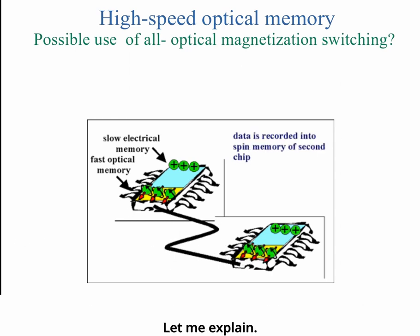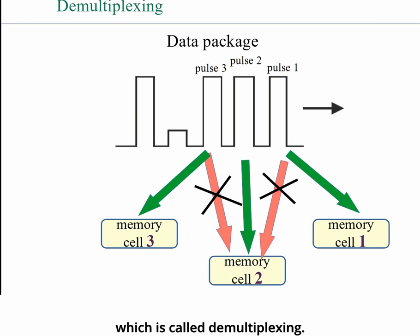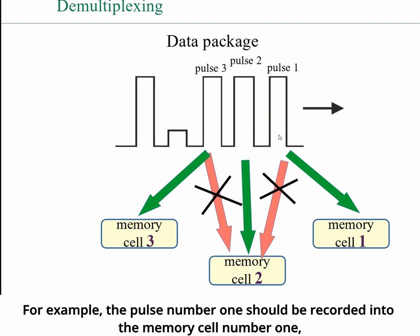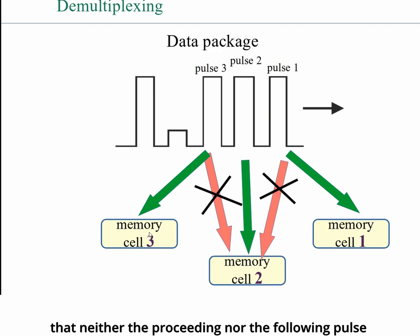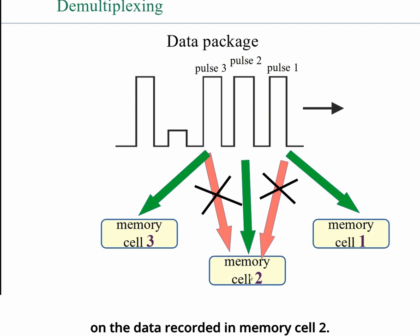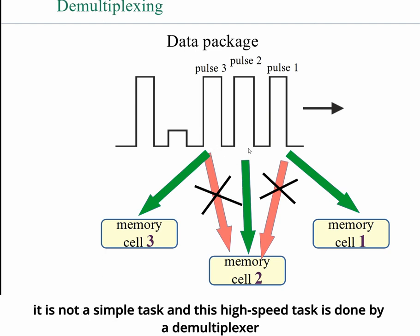Let me explain. In addition to data storage, there is another very important function of high-speed optical memory called demultiplexing. Demultiplexing means that each pulse in a train of short data pulses should be recorded into an individual memory cell — pulse number 1 into cell number 1, pulse number 2 into cell number 2, and so on. It is critically important that neither the preceding nor the following pulse has any influence on the recorded data. Given that the interval between pulses is extremely short, this is not a simple task, and it is performed by the demultiplexer.